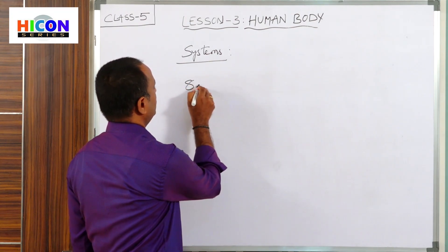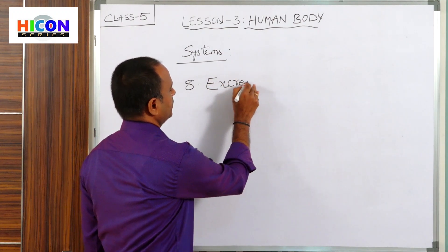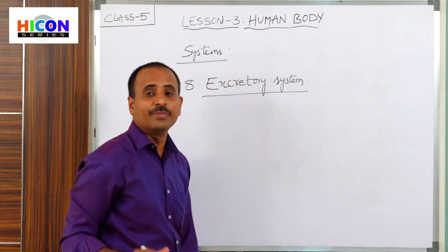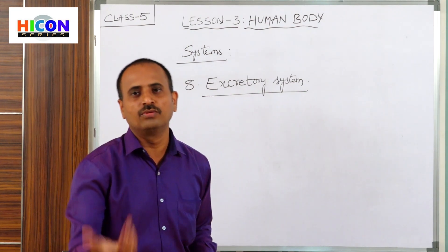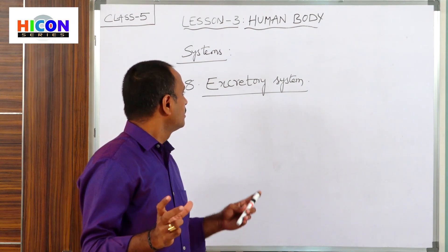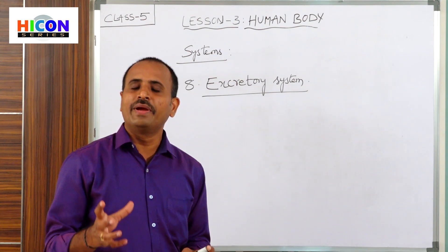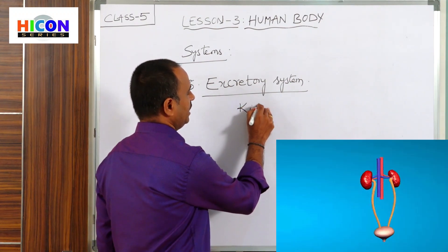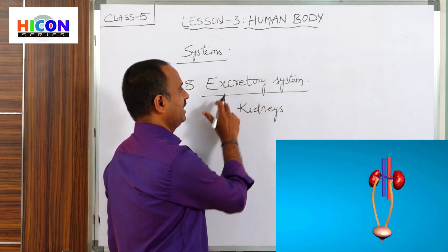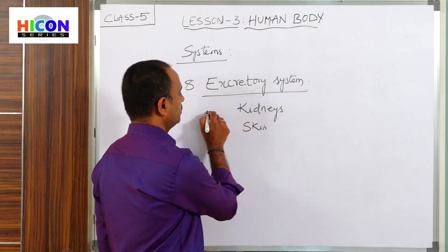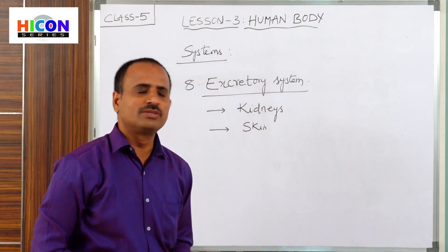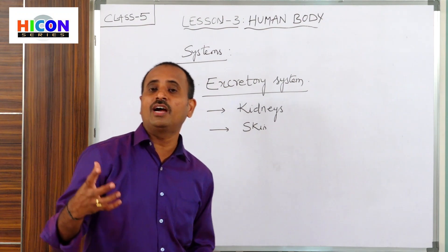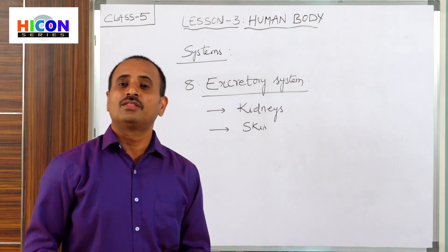The next system is the excretory system. The word 'excretory' means releasing out or sending out. The main parts of the excretory system are the kidneys and skin. All the food that is digested is absorbed by the small intestines, and the food that is undigested is sent to the large intestine. That undigested food is called waste food and is sent to the anus.